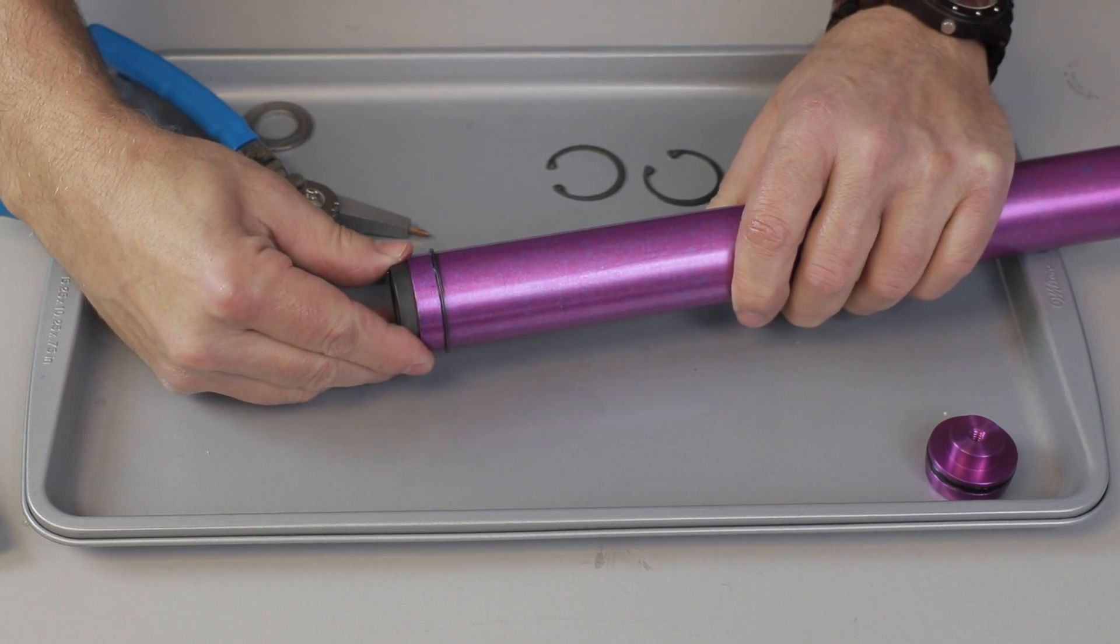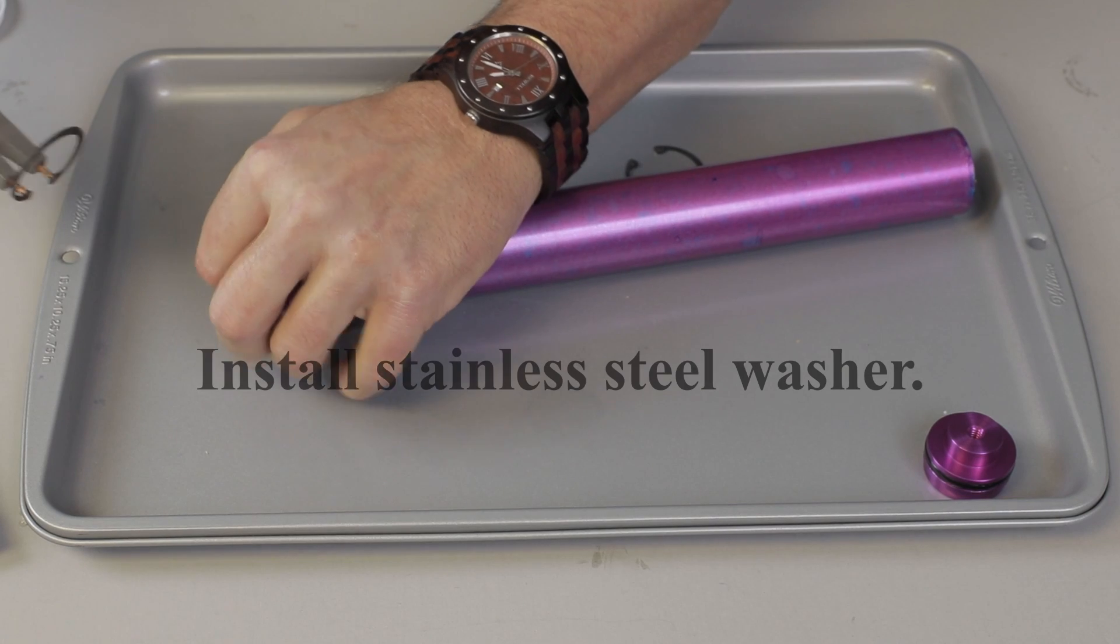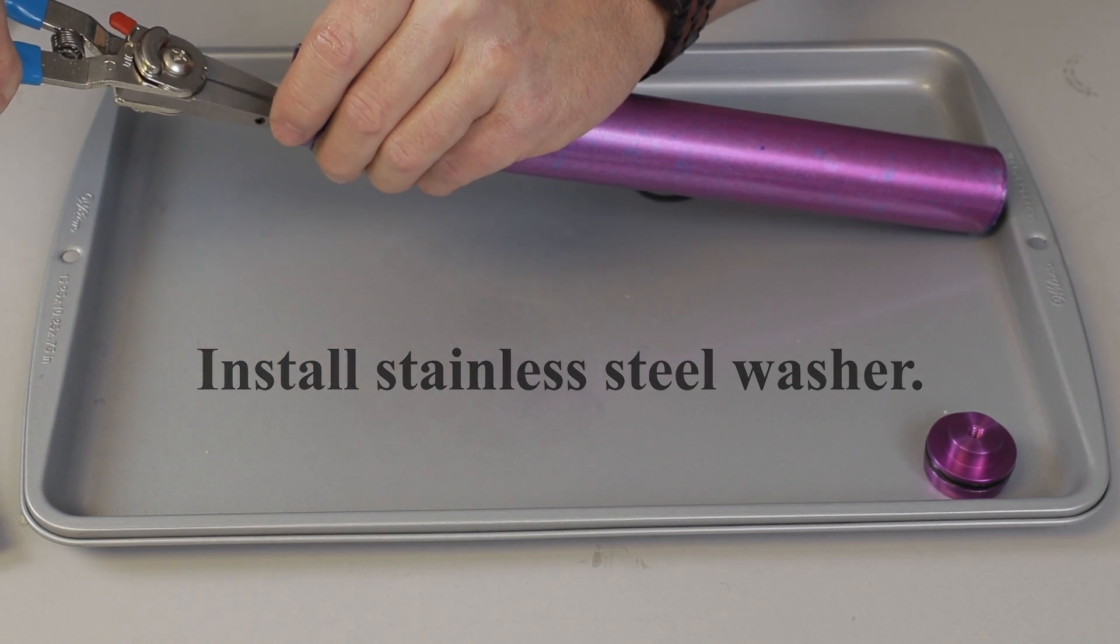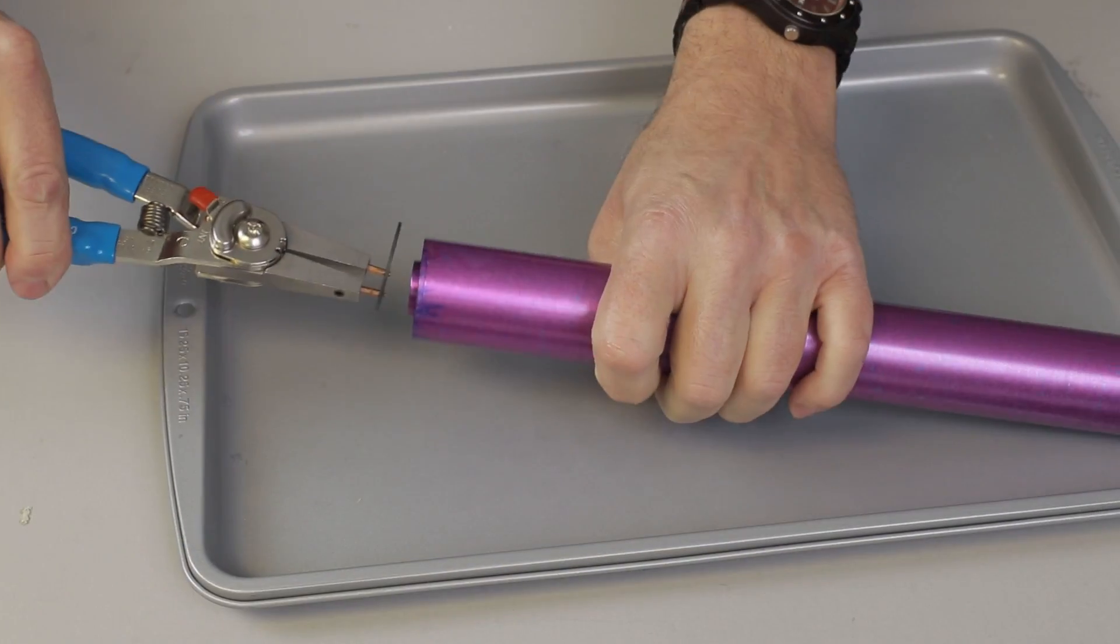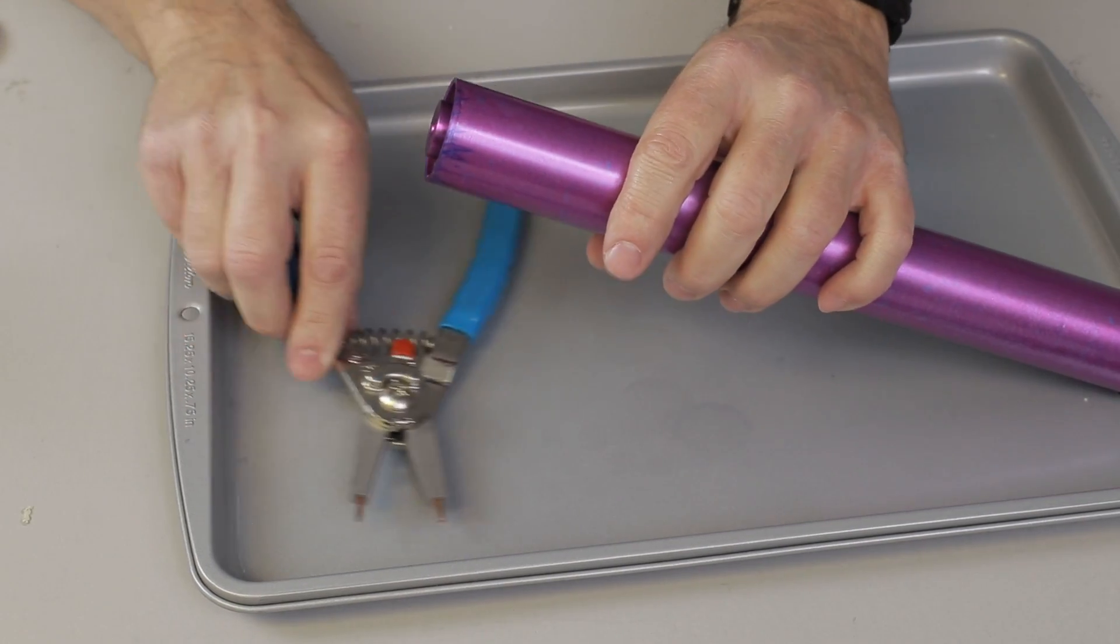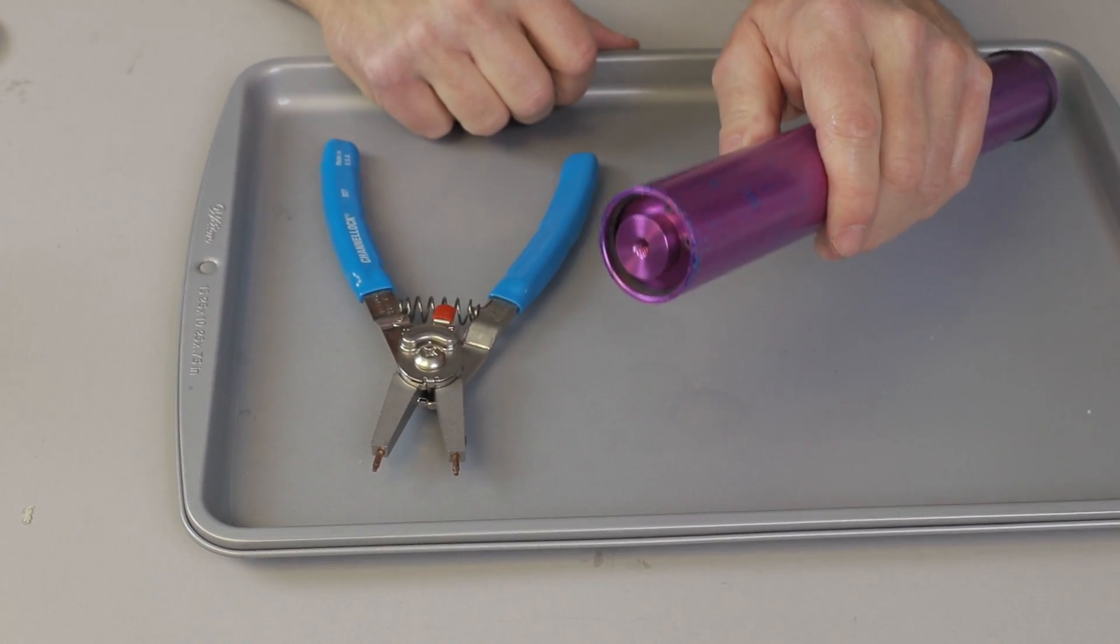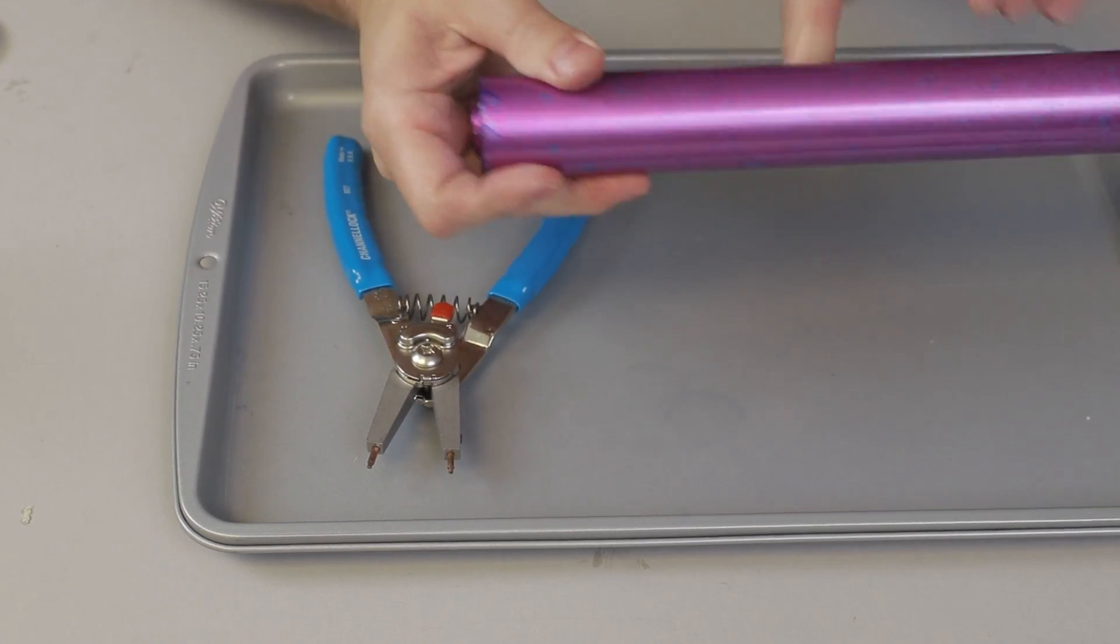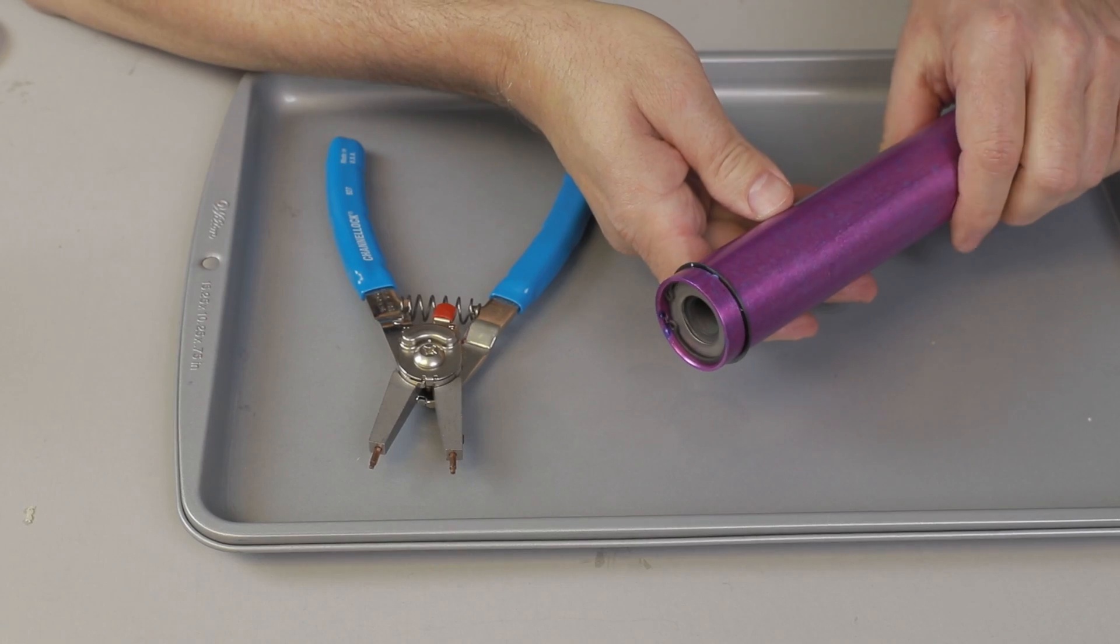Snap ring in. Double check to make sure that is seated properly. You don't want any surprises on either end, so I check this end and check the nozzle end. Make sure the snap ring is seated in there properly.